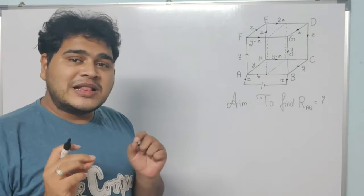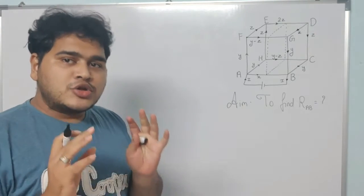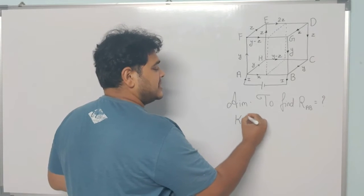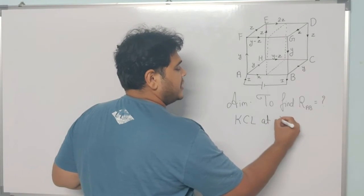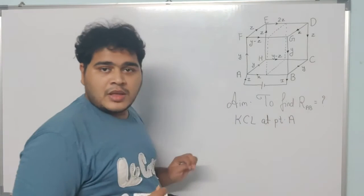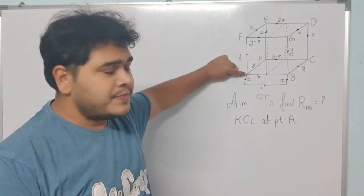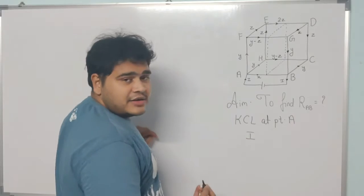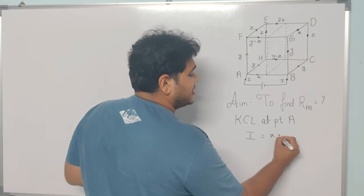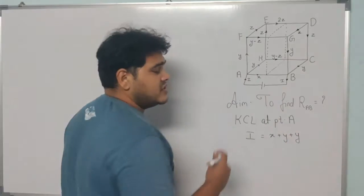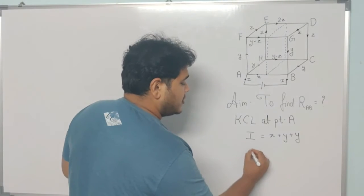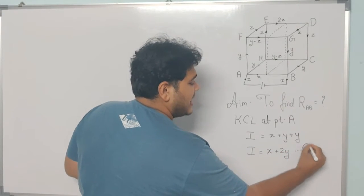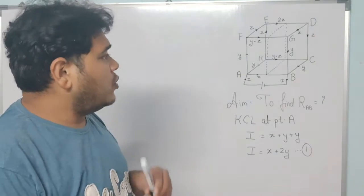Applying KCL at point A, the incoming current I equals the outgoing currents x plus y plus y. So equation number one is: I = x + 2y. We have three unknowns — x, y, and z — so we need to find relations between them.